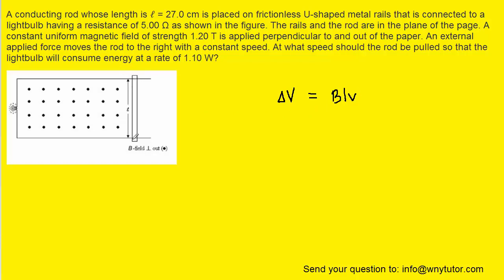Now, if the potential difference across the rod is ΔV, that means that the potential difference across this lightbulb will also be ΔV.